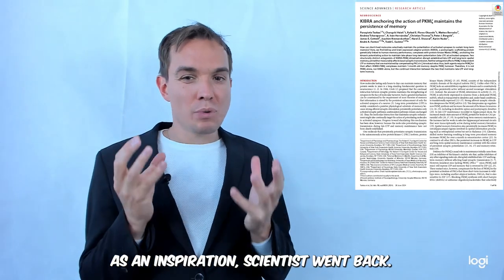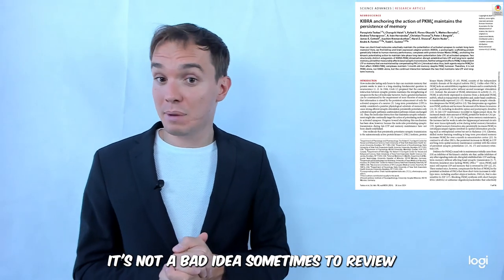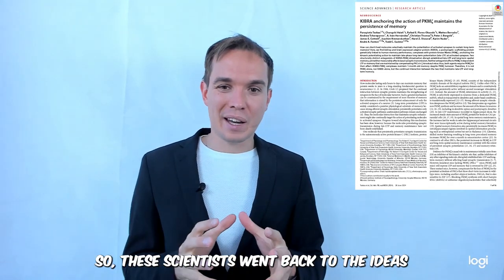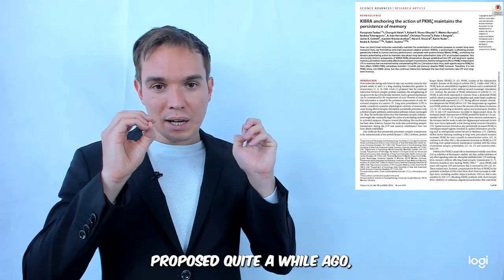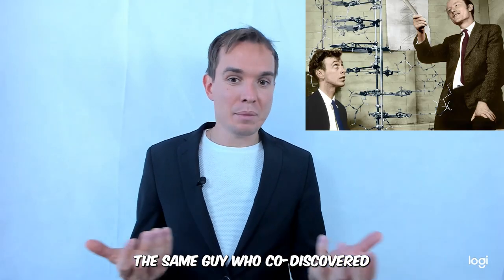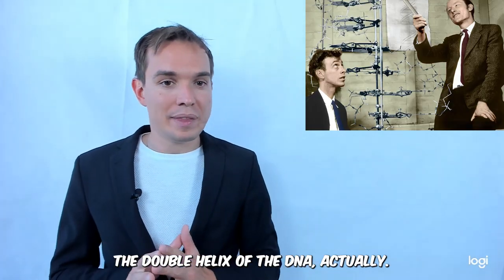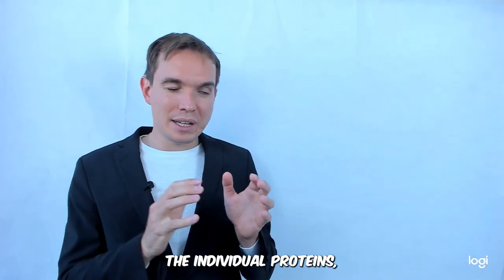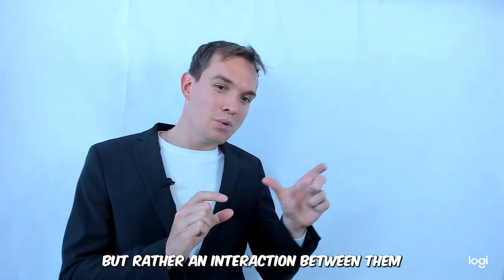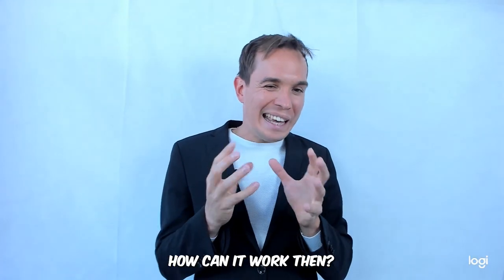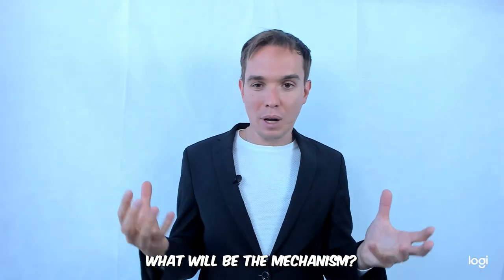As an inspiration, scientists went back—and it's not a bad idea sometimes—to review what kind of ideas we had before. These scientists went back to ideas proposed quite a while ago, specifically in 1984 by Francis Crick, the same guy who co-discovered the double helix of DNA. Specifically, Francis Crick pointed that it's most likely not the individual proteins but rather an interaction between them that maintains the above described changes of synaptic strength. How can it work then? What will be the mechanism?